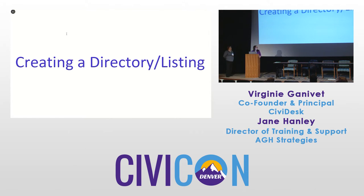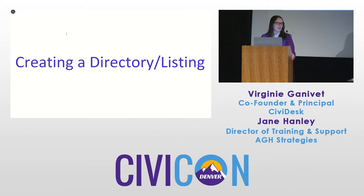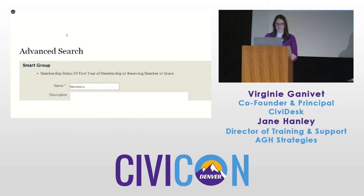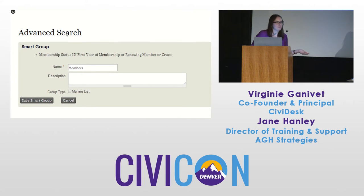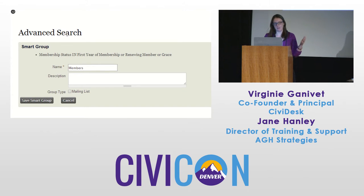If you use Drupal views you might use a view for something like this, but if you ever want to show a member directory, the easiest way to do it with Joomla and WordPress is to create a directory listing profile. In this example, we want to make a directory of our members. The first thing you want to do is have a group of people whose information you want to show — so I've made a smart group of members.